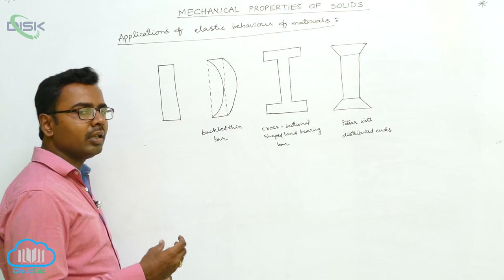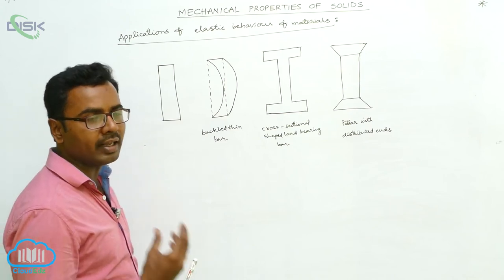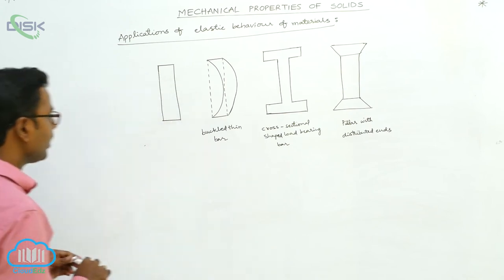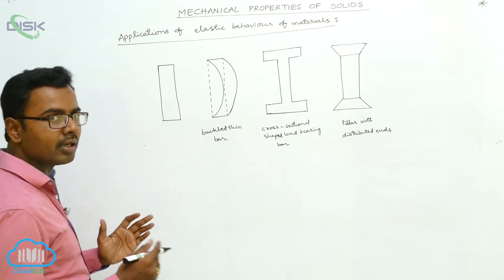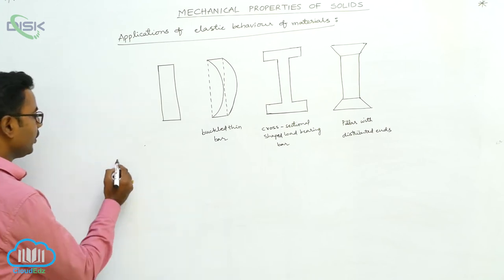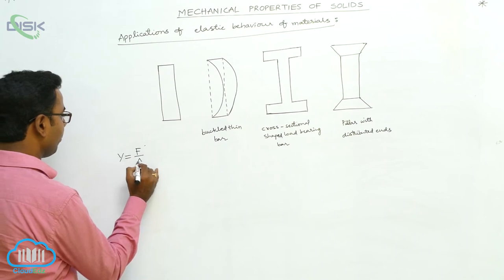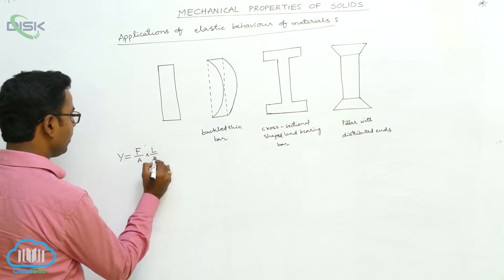Because the elasticity is dependent upon the value of Young's modulus. We can understand like this here. How is the steel more elastic than rubber? Now, we wrote the formula for Young's modulus: Y is equal to F by A by delta L by L.